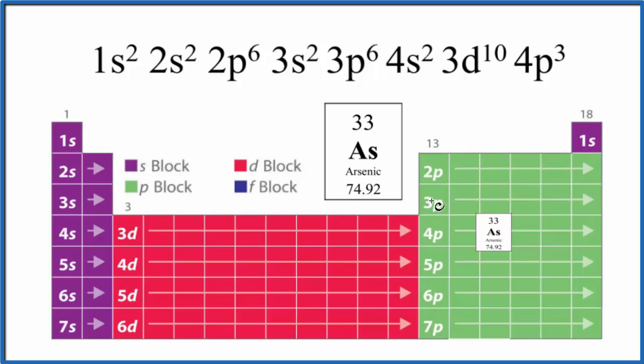3s², 3p⁶, 4s². And after 4s we go to the 3d, which can hold up to 10. So we have 3d¹⁰, and right now we've used 30 of these electrons. We only need three more. So after 3d we have 4p¹, two, three. There's arsenic, 4p³.